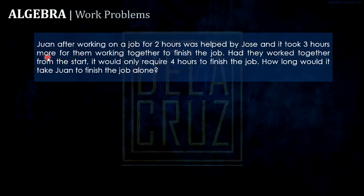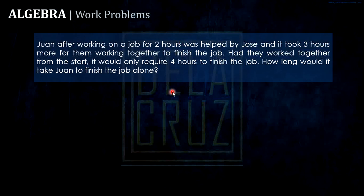Next problem: Juan, after working on a job for two hours, was helped by Jose. It took three more hours for them working together to finish the job. Let's interpret this: initially there is one whole job. Juan worked for two hours, meaning some work was done but not finished. There will be a remaining work after Juan's two hours alone.